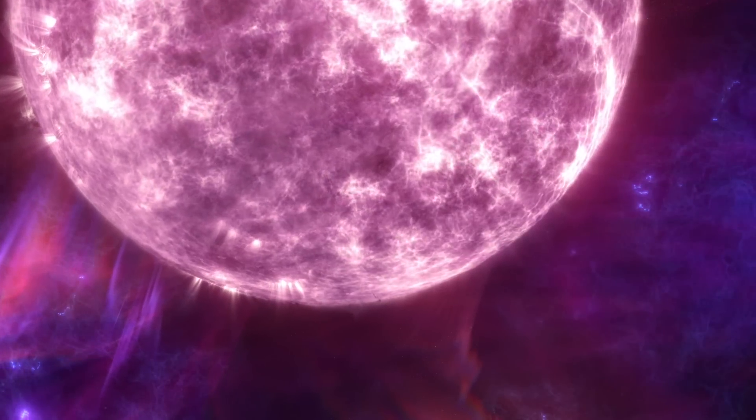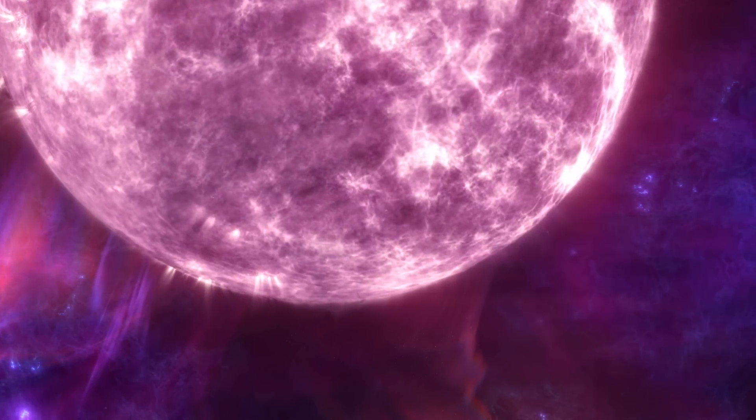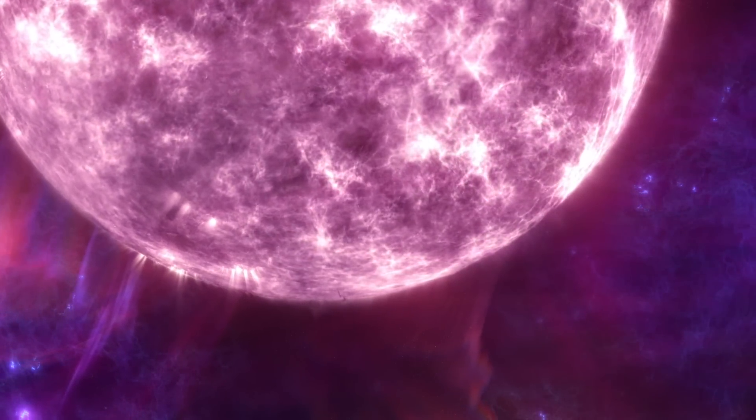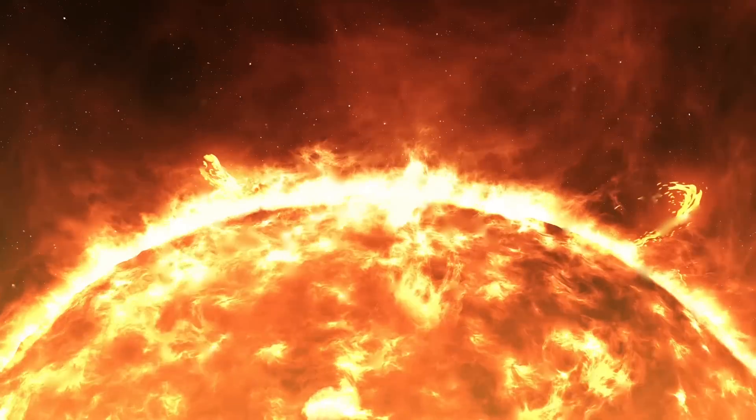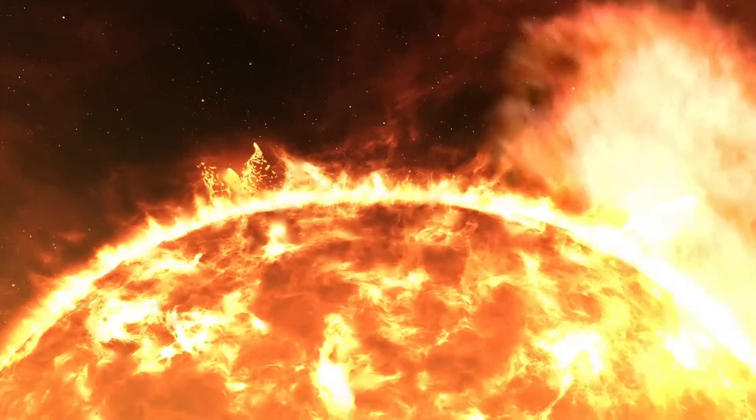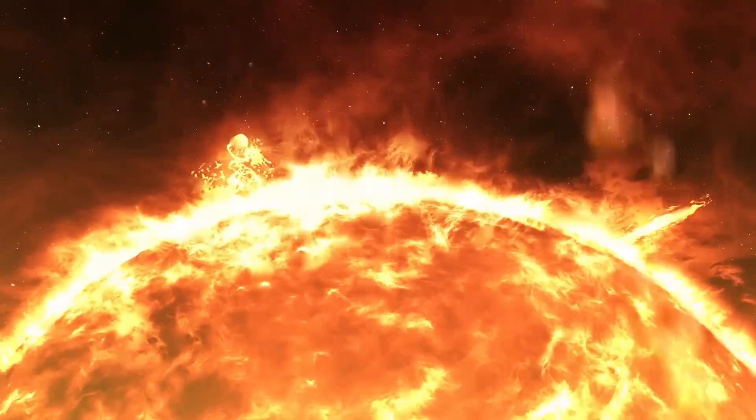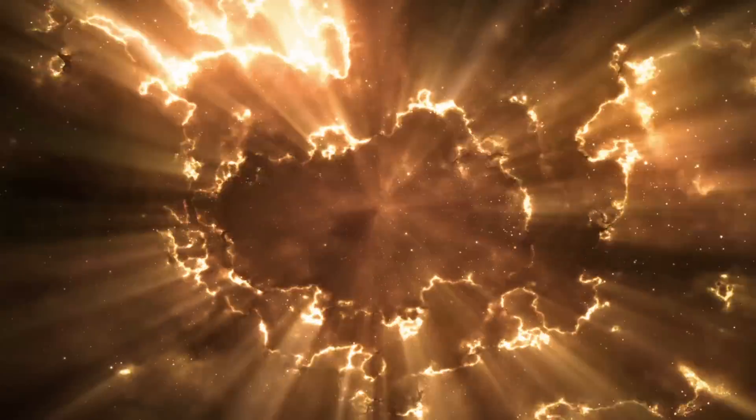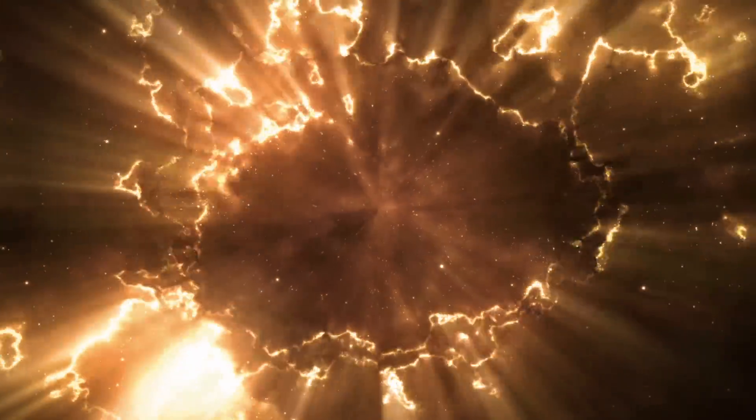On the other hand, CMEs are massive ejections of solar wind and magnetic fields from the solar corona. Think of them as giant bubbles of gas and magnetic fields that get hurled into space. When a coronal mass ejection occurs, it sends billions of tons of solar particles into space at very high speeds.